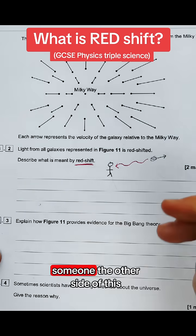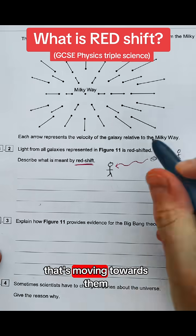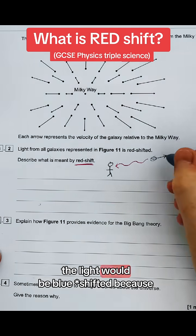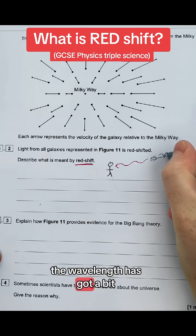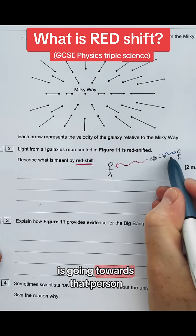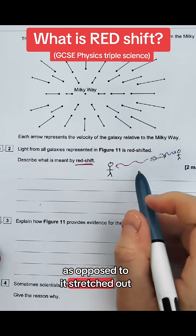If you were to hypothetically have someone on the other side of this galaxy that's moving towards them, the light would be blue because the wavelength has got a bit smaller because the velocity of the galaxy is going towards that person, as opposed to it's stretched out here.